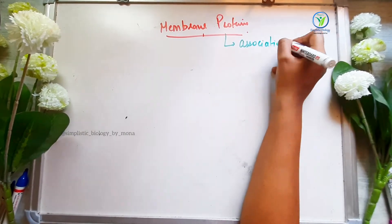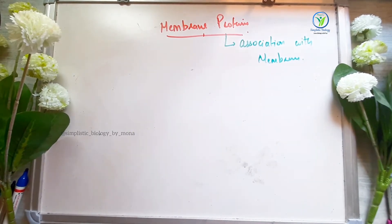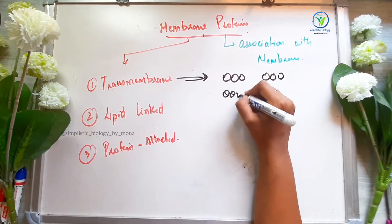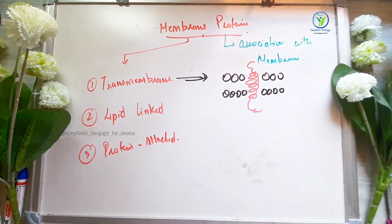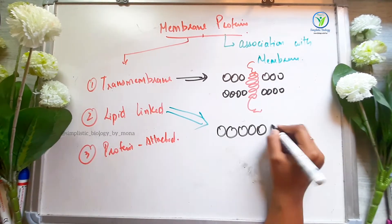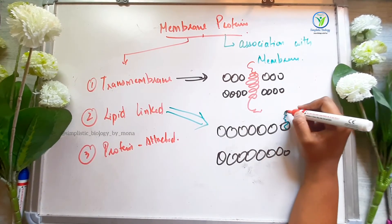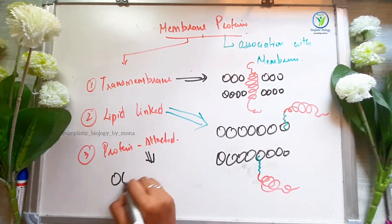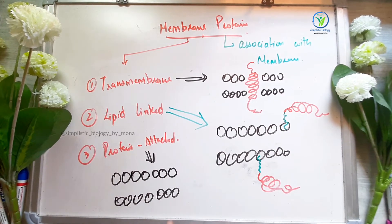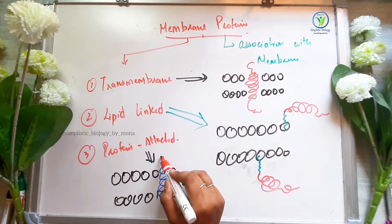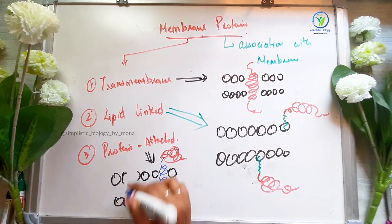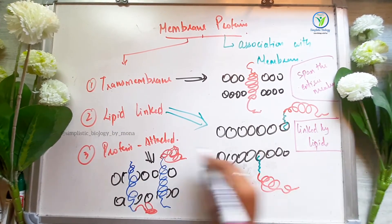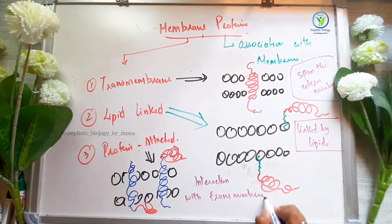Two types are present in the plasma membrane: integral and peripheral. Looking at the plasma membrane, three subtypes are present: the first one is transmembrane, the second one is lipid-linked, and the third one is protein-attached. A transmembrane protein spans both lipid layers. Lipid-linked means the protein is attached via a covalently linked lipid. Protein-attached means the protein interacts with a transmembrane protein.